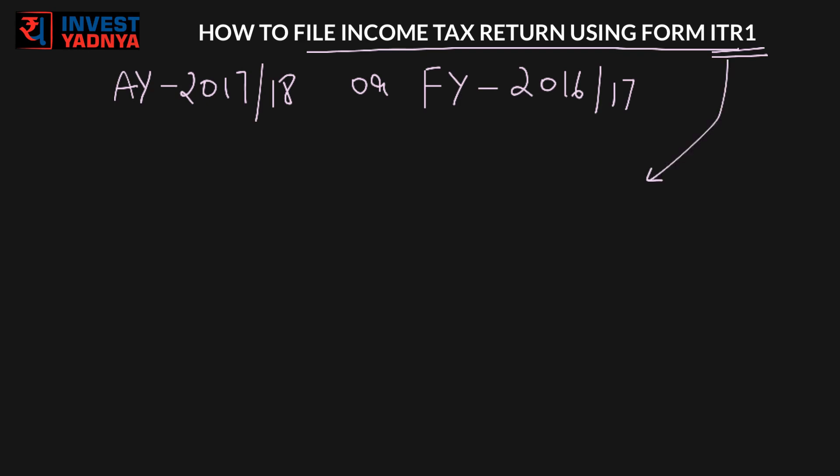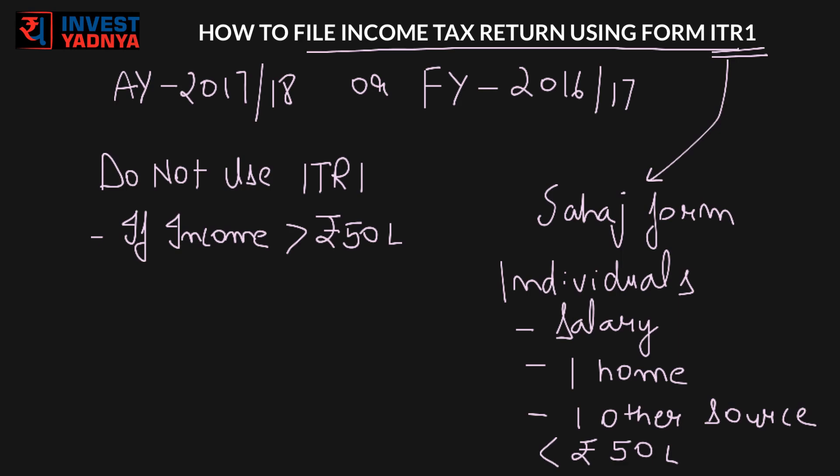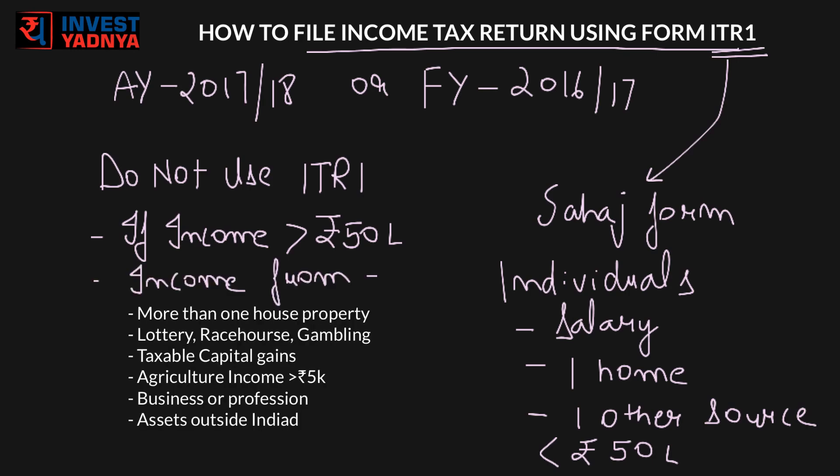Remember, ITR-1 form is also called the Sahaj form. This form is for individuals earning income from salary, one house, and one other income such as income from interest, and should have total income less than Rs. 50 lakhs. Individuals having income above 50 lakhs cannot use this form. Also, individuals who have earned income through certain other means are also not eligible to file income tax return through ITR-1 form.